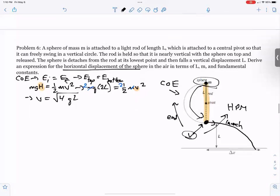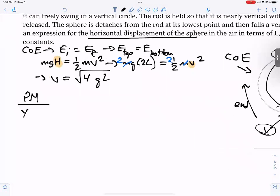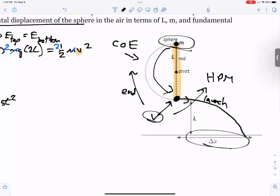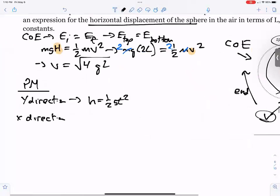So now for the projectile motion part, we do need two possible equations here. We need one for the Y direction, which would be height is equal to one half GT squared. We're going to need that. And then for the X direction, which is ultimately what we are looking for, which is the horizontal displacement delta X. And the only equation that goes with that, it would be delta X equals initial velocity times time.